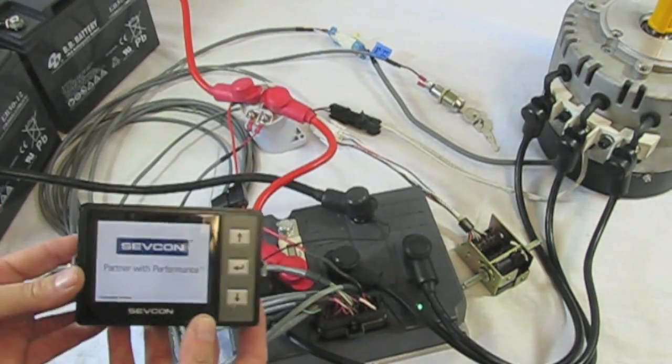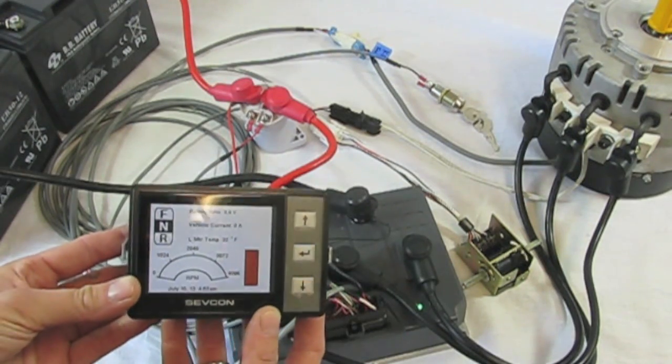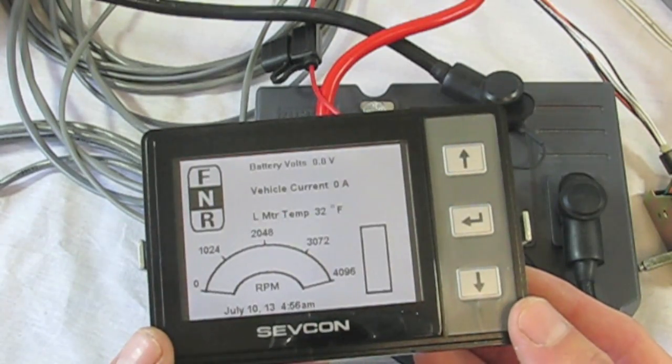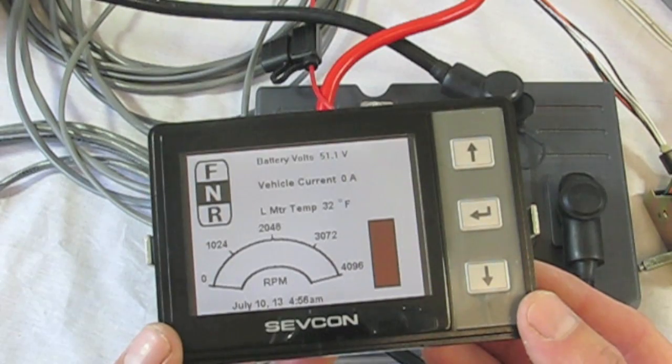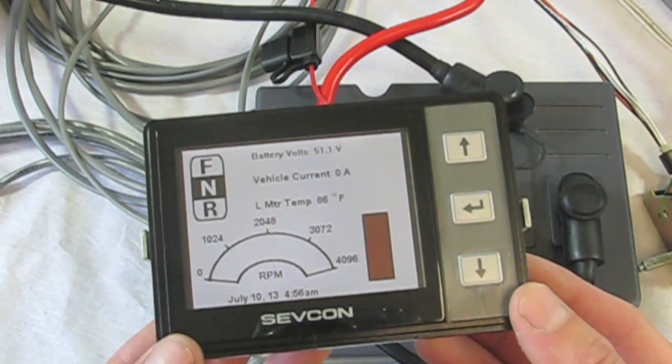Once you boot up the controller you'll see some really good information on your system including your battery voltage, the RPM of the motor, direction, even motor temperature.